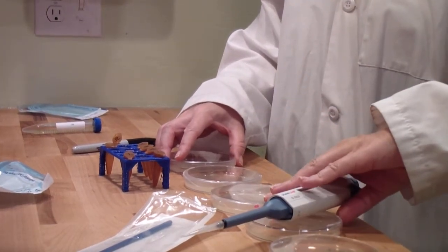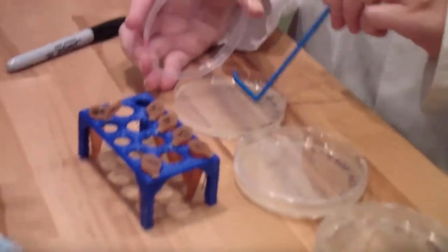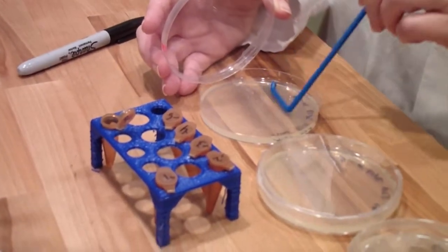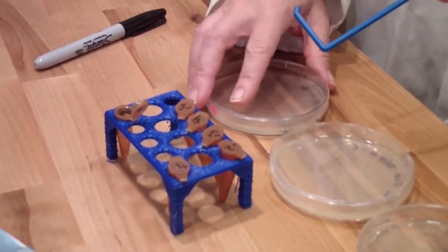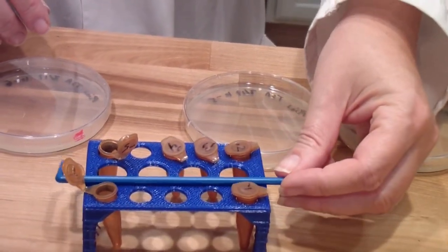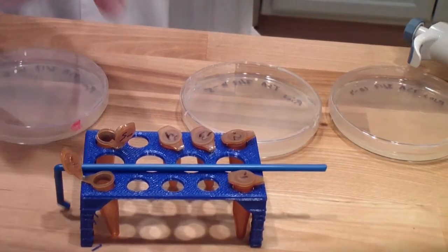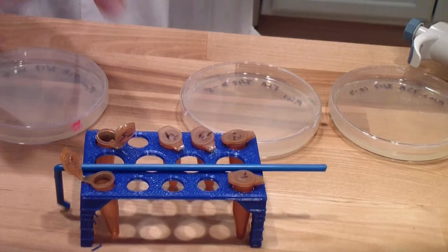Use the spreader to move the sample over the entire surface of the agar. Be gentle so you don't break the agar. Place the spreader over the edge of the tube rack, using the handle to secure it. Be careful not to let the end touch any other surface, in order to avoid contamination.